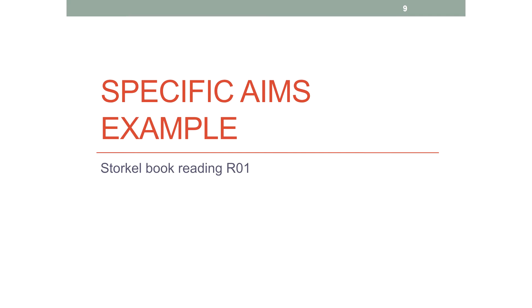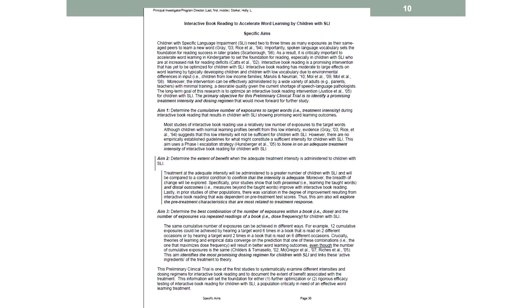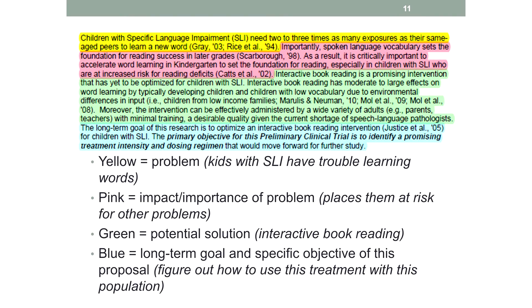Now we're going to look at an example from one of my grants. I'm using my own so I don't take away someone's opportunity to deconstruct their own aims in the group. Here's what the aims look like — it's one page, with some formatting, indents, and white space to make it more pleasing to the eye. What you should notice is that every sentence, or maybe every couple of sentences, has a purpose. When you look at your own aims, realize these are very short sections. You need to make a point and move on — ask yourself: what is this sentence doing for me, and what is it communicating to the reviewer?